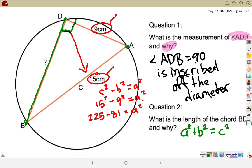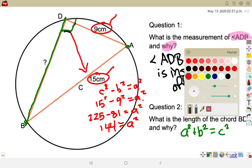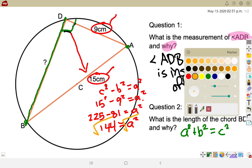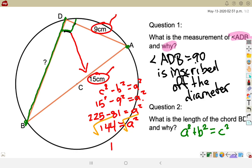So that gives me 225 minus 81 is equal to A squared. And that gives us 144 is equal to A squared. And then we need to take the square root on both sides, and we take the square root. Now we have A is equal to 12. So the length from B to D is 12 centimeters. Why?